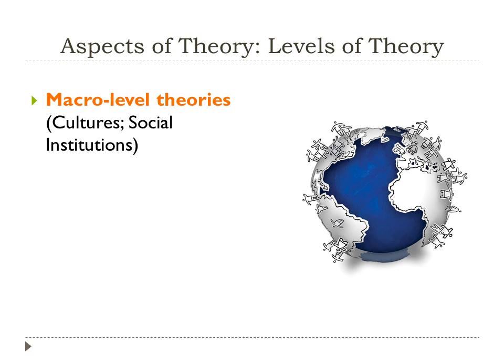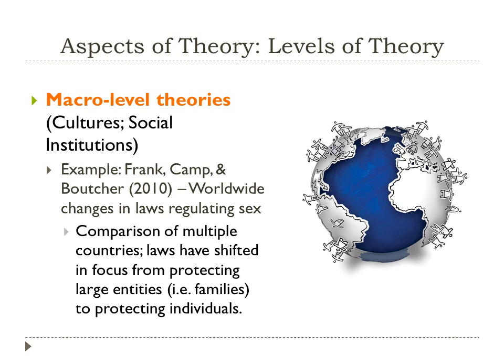The biggest level of theory is macro-level theory — cultural and social institution-level theories. For example, Frank, Camp, and Boucher's 2010 study on worldwide changes in laws regulating sex compared multiple countries and found that laws have shifted from protecting large entities like families to now protecting individuals. That would be an example of a macro-level theory, because they were looking at cultures across many regions of the world.